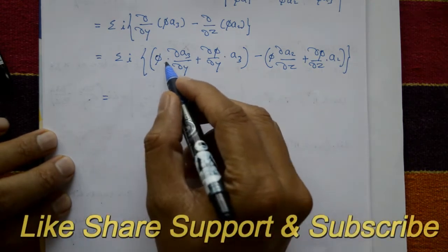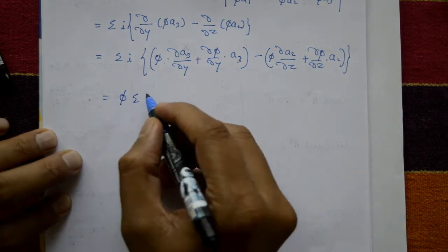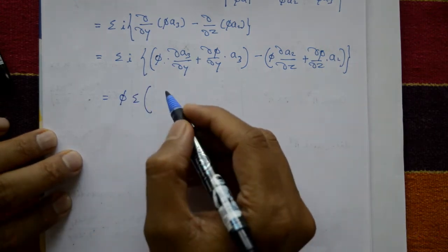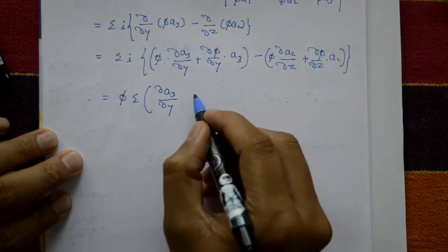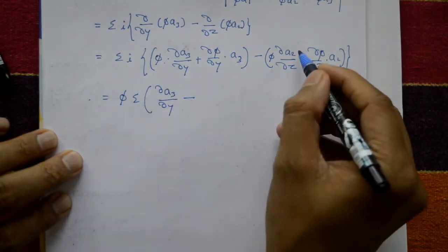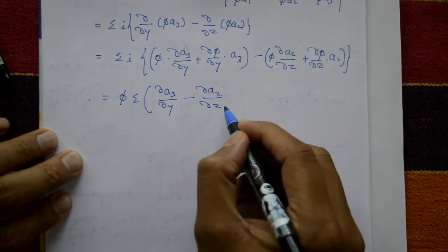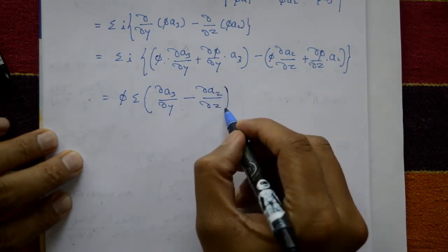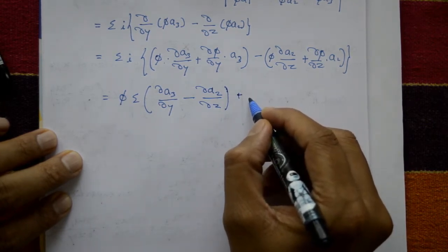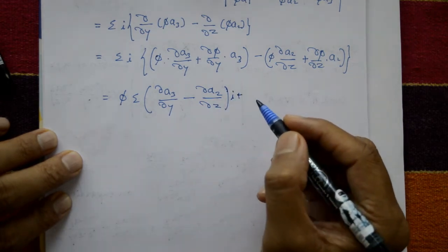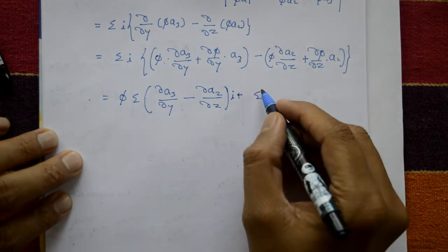Now take φ outside as a common factor. This gives: summation i times φ times (∂a3/∂y minus ∂a2/∂z), plus the remaining terms with ∂φ/∂y·a3 and ∂φ/∂z·a2 grouped separately.